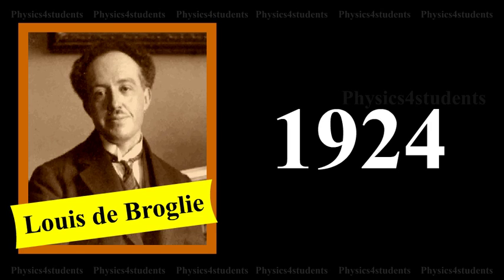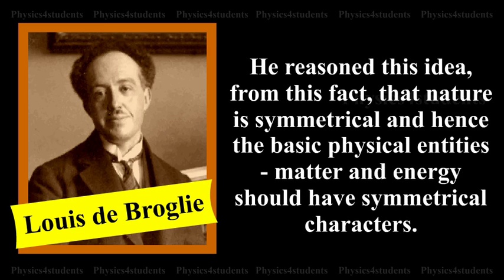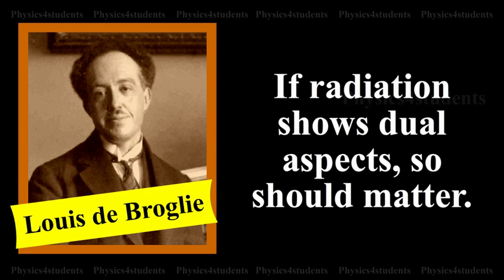In 1924, a French physicist Louis de Broglie put forward the bold hypothesis that moving particles should possess wave-like properties under suitable conditions. He reasoned this idea from the fact that nature is symmetrical and hence the basic physical entities, matter and energy, should have symmetrical characters. If radiation shows dual aspects, so should matter.